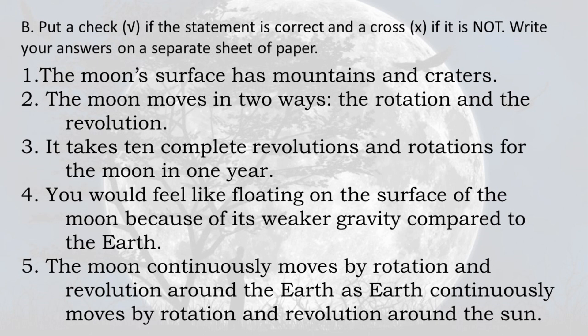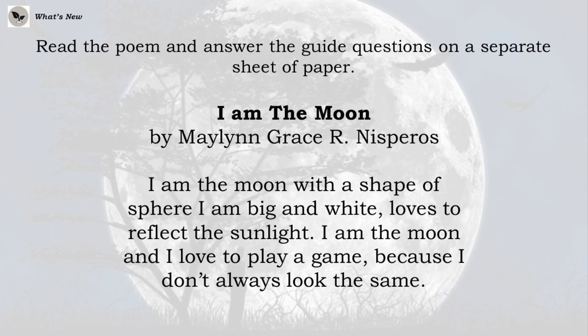Activity B: Put a check if the statement is correct and a cross if it is not. Write your answers on a separate sheet of paper. 1) The moon's surface has mountains and craters. 2) The moon moves in two ways: rotation and revolution. 3) It takes 10 complete revolutions and rotations for the moon in one year. 4) You would feel like floating on the surface of the moon because of its weaker gravity compared to Earth. 5) The moon continuously moves by rotation and revolution around the Earth as Earth continuously moves around the Sun.